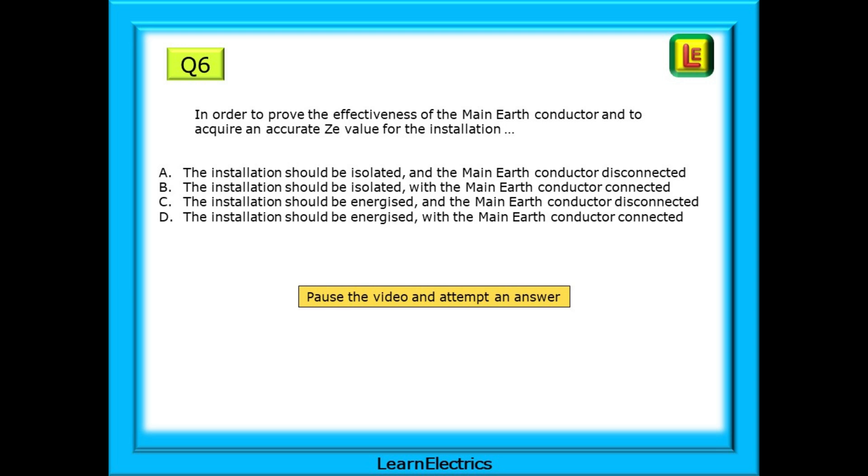The question asks, in order to prove the effectiveness of the main earth conductor and to acquire an accurate ZE value for the installation, what must we do? Again, pause the video, read each possible answer and make a choice.